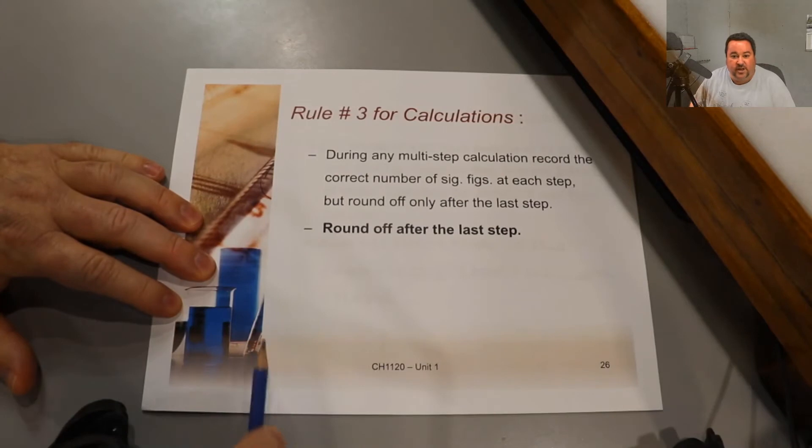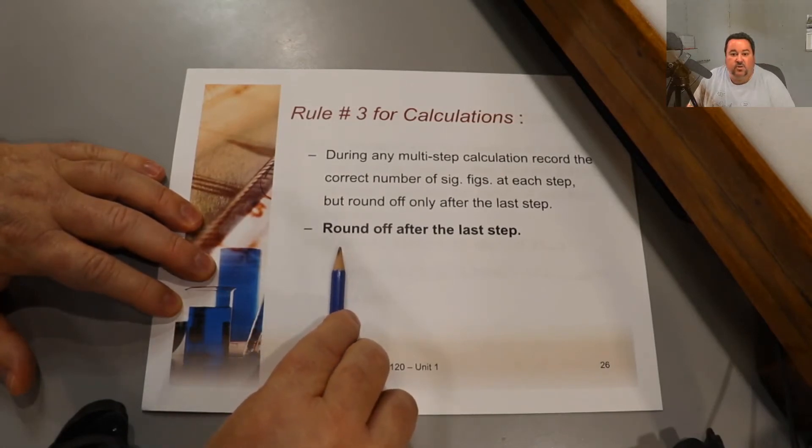The third and final rule for calculations is that you only round off after the last step. While you need to keep track of your significant figures step-wise, we don't actually round anything off until after the last step. If we round repeatedly, we will be off from the right answer, and you're going to lose marks.